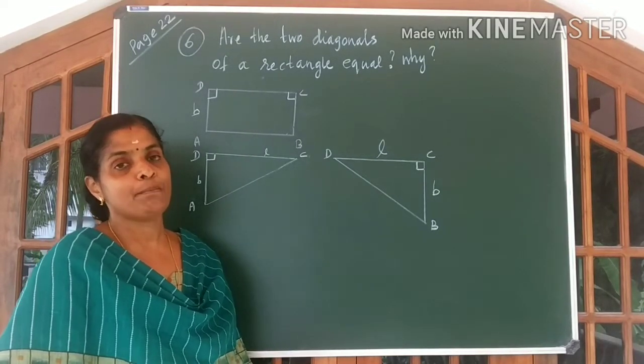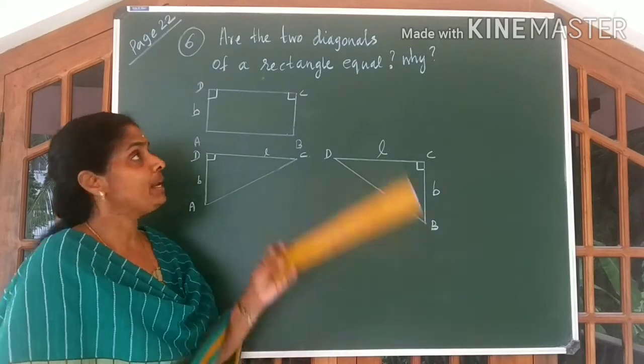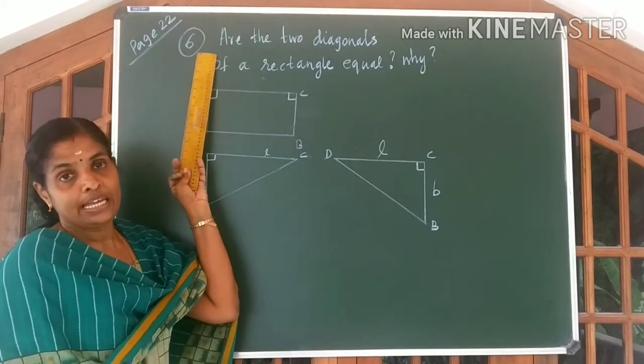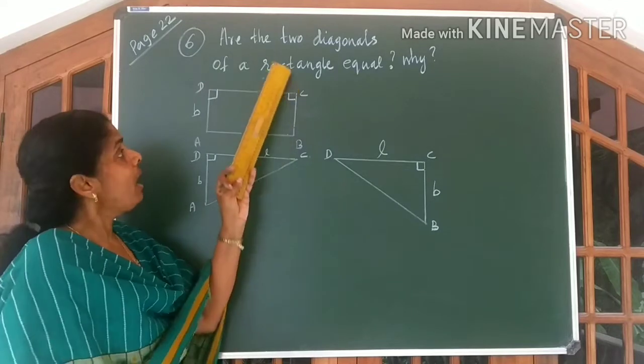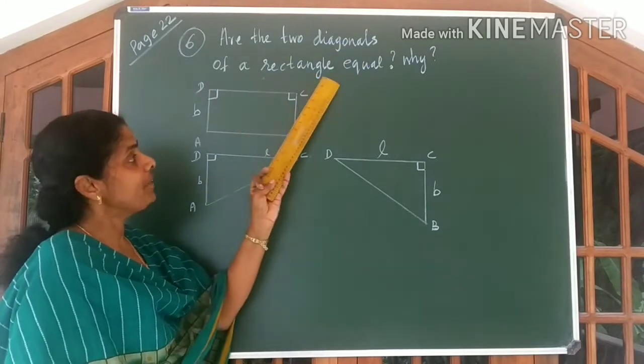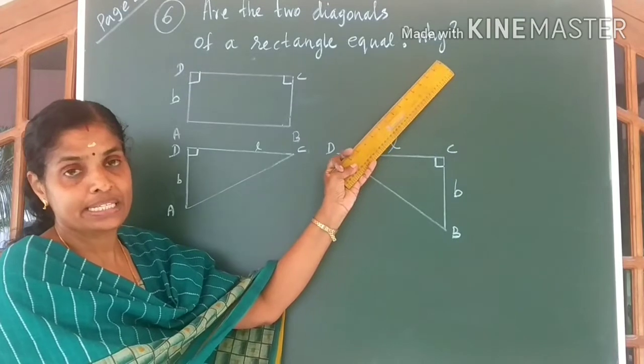Question is in page number 22, question number 6. Look at the board children. Are the two diagonals of a rectangle equal? Why? Is the question.